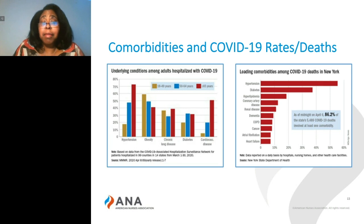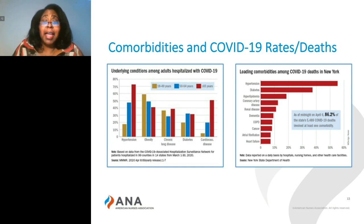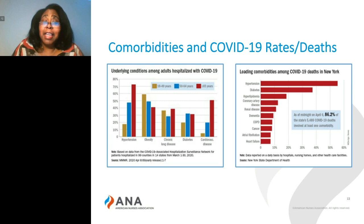The same information has also been seen in New York, where as many as 86% of those deaths in New York had at least one chronic disease. And that was the last information that we had from that hotspot, including the diseases of hypertension, obesity, or diabetes.